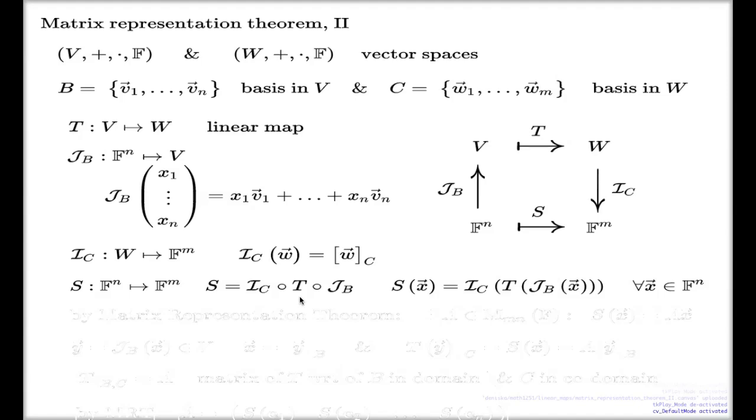The second observation I'd like to make is that this new linear map S now acts between very familiar couple of vector spaces. It's no longer some arbitrary V and some arbitrary W—it's just very particular n-tuples and m-tuples.